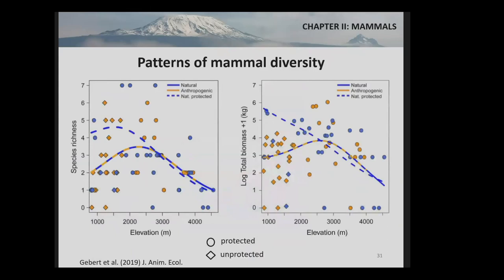For both species richness and total biomass, we found a unimodal pattern with elevation. Anthropogenic and natural habitats showed no difference for either species richness or biomass, and this pattern closely mirrors the pattern of primary productivity on Mount Kilimanjaro. However, if you only looked at protected habitats, both species richness and biomass increased at low elevations — likely because at low elevations, mammal richness and biomass is restricted due to human impacts, and only in protected habitats can large mammals be sustained.